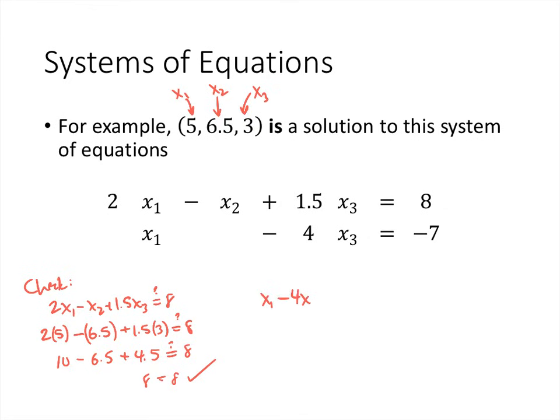So x1 minus 4x3, does that equal negative 7? x1 is 5, x3 is 3, that's 5 minus 12, and 5 minus 12 does in fact work out to be negative 7. Since these values make both of our equations true, that means this is a solution to our system of equations.